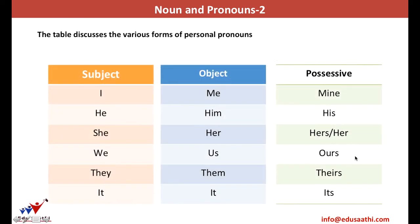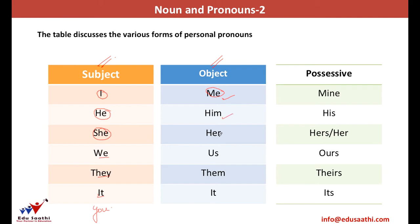The table defines the subject and object cases of all pronouns. Subject cases: I, he, she, we, they, it, you. Object cases: me, him, her, us, them — while 'it' remains 'it' in the object case, and 'you' also remains 'you' in the object case. These two are exceptions.